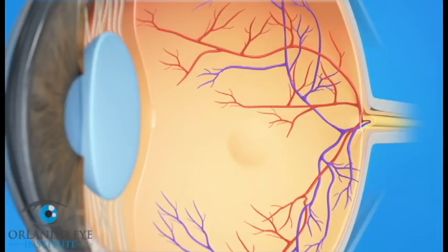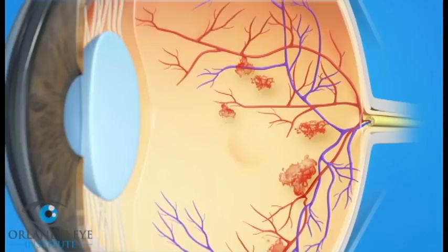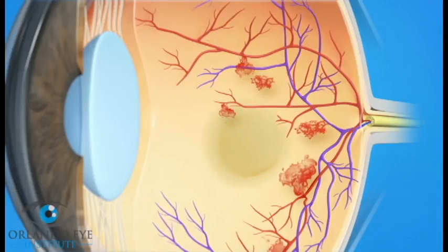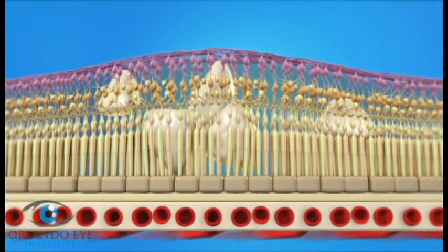With nonproliferative diabetic retinopathy, or NPDR, damaged blood vessels in the retina begin to leak fluids, including small amounts of blood. Sometimes, deposits of fats may leak inside the retina. These deposits are called hard exudates.